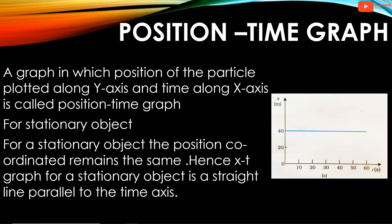Position-time graph: a graph in which the position of the particle is plotted along the y-axis and time along the x-axis is called a position-time graph. For a stationary object, the position coordinate remains the same. Hence, the position-time graph for a stationary object is a straight line parallel to the time axis.